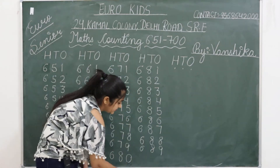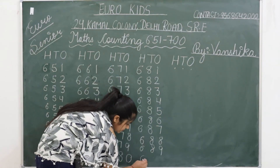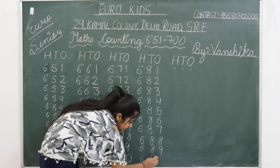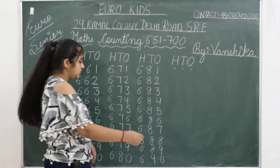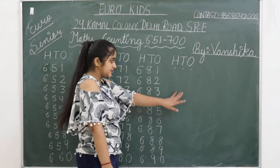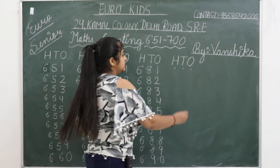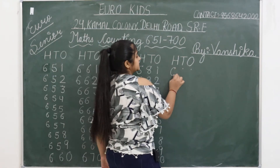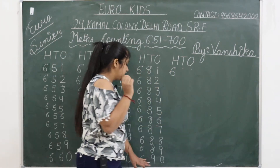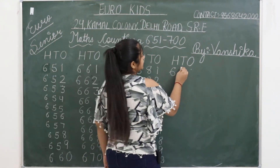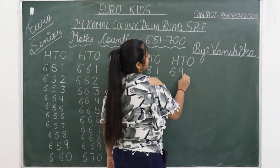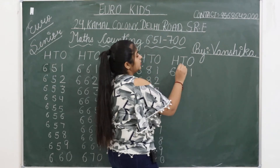And now what comes after 689? After 89 comes 90. Understood? And next, the 6 stays as it is. After 90 comes 91 — so we write 691.